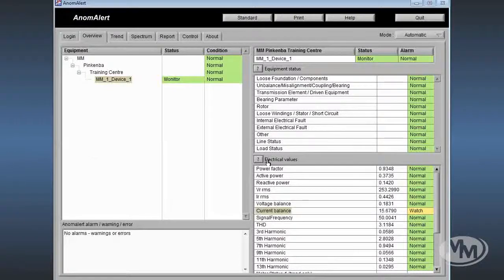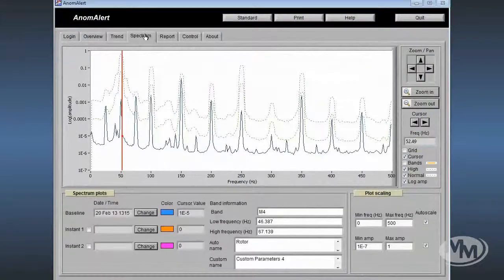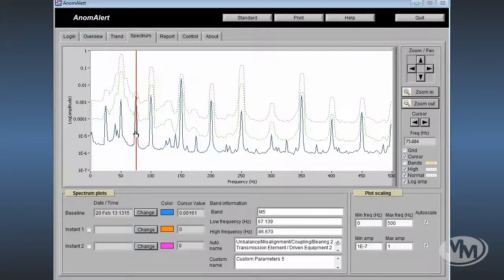The spectrum page of the Anomalert software shows the PSD plot or power spectrum density. It is from this plot that mechanical faults are determined and derived. The various frequency bands are usually indicative of different mechanical problems. For example, the one under the cursor at the moment usually indicates issues with unbalance, misalignment, coupling or bearings.